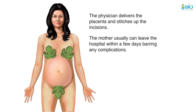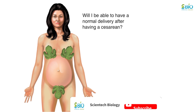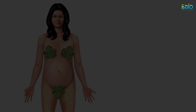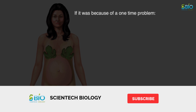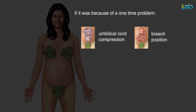Usually the mother is allowed to leave the hospital within a few days, barring complications like wound infections. One concern many women have is whether they will be able to have a normal delivery after having a caesarean. The answer depends on the reason for having the C-section in the first place. If it was because of a one-time problem like umbilical cord compression or breech position, the mother may be able to have a normal birth.